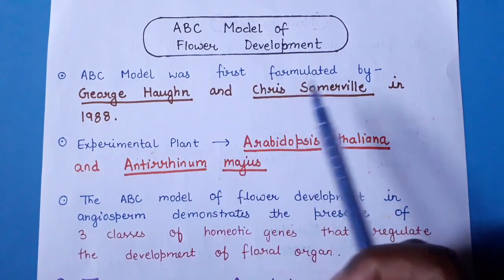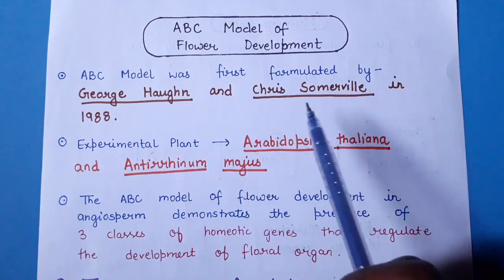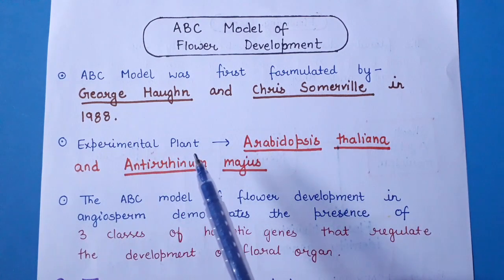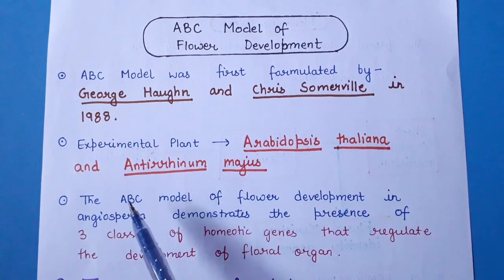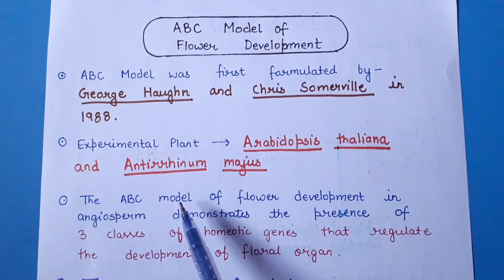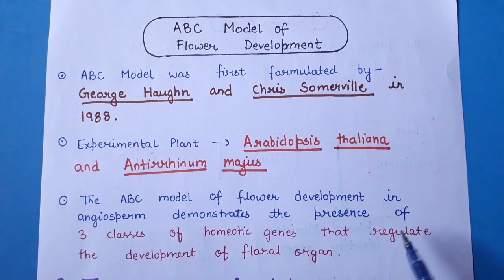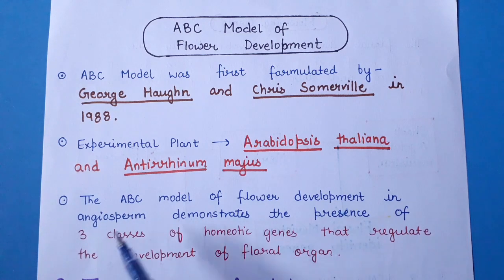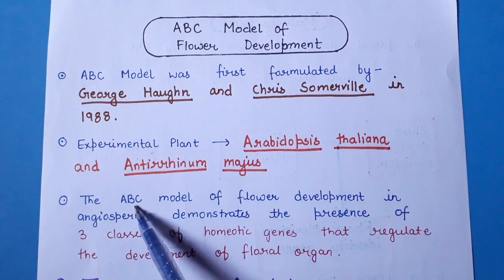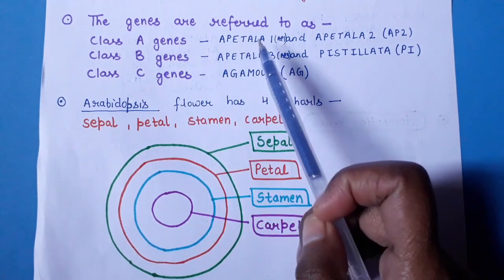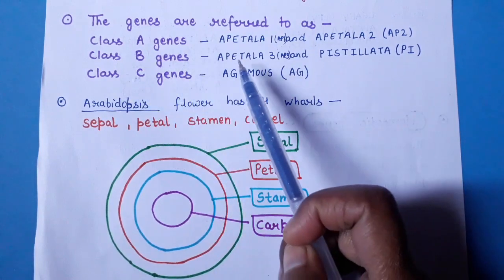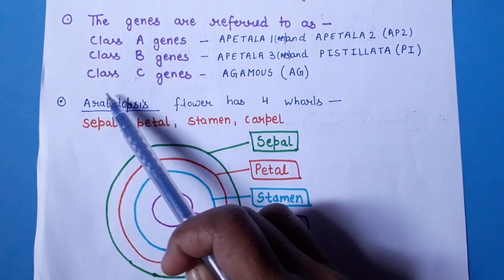The ABC model of flower development was first formulated by George Hogan and Chris Sommerweil in 1988, using Arabidopsis thaliana and Antirrhinum majus as experimental plants. The model states that three classes of homeotic genes regulate floral organ development: Class A genes (APETALA 1 and APETALA 2), Class B genes (APETALA 3 and PISTILLATA), and Class C genes (AGAMOUS).